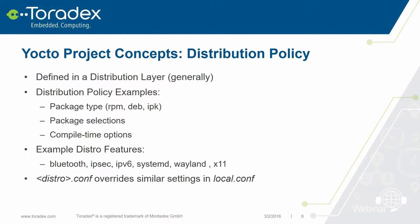Distribution policy is typically defined within a distribution layer. Examples of distribution policy include package type — RPM, DEB, and IPK packages are supported — as well as package selection and compile-time options. A distro may also define broad features it supports, such as Bluetooth, IPsec, IPv6, Systemd, Wayland, X11, and quite a few others. It's important to note that the distro's conf file overrides similar settings in the build conf's local.conf file, so it's given some authority to set policy for the overall image.